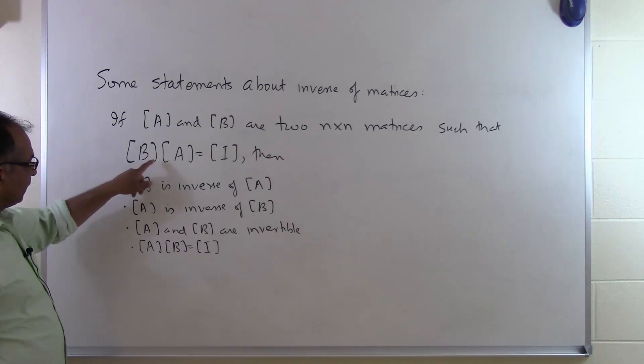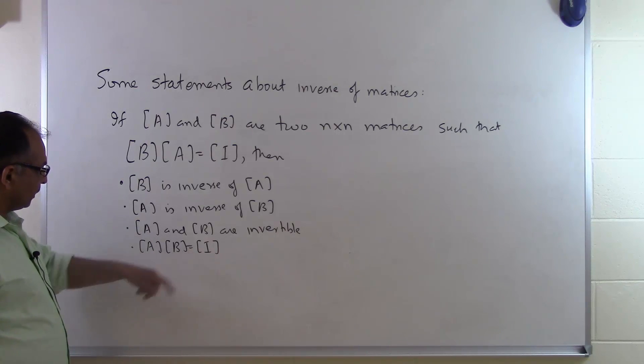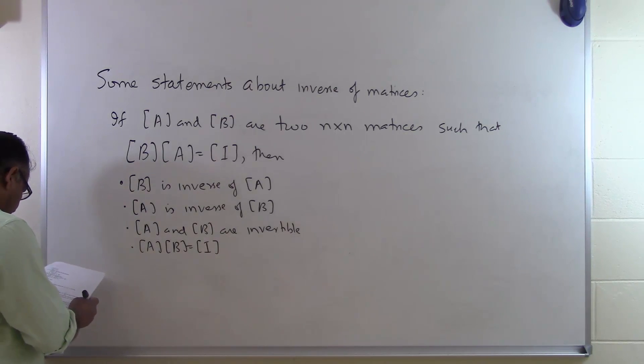So although we are able to say B times A is equal to I, then B is inverse of A or A is inverse of B, it also means that A times B will be equal to the identity matrix.